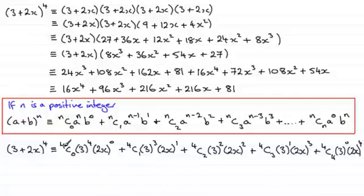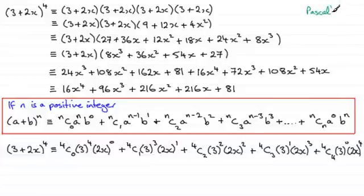Now, when we work out these values — 4C0, 4C1, 4C2, 4C3, and 4C4 — we can either use the calculator, or there's another way called Pascal's Triangle. It's just a pattern of numbers, and it can be quite quick when we have a small value here to work with.